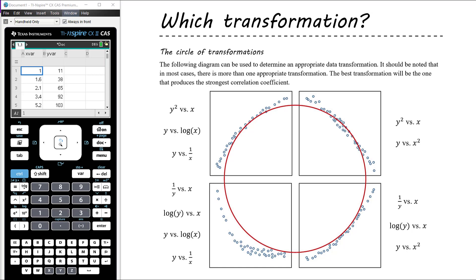This is the final video covering content from chapter 5. We want to bring together the three different transformations we've looked at and add in the layer of being able to make a decision about which transformation is going to be appropriate and best. This is an image from your textbook called the circle of transformations.